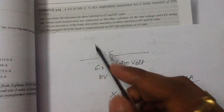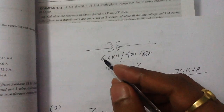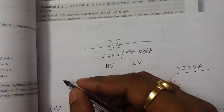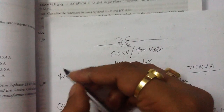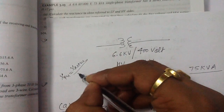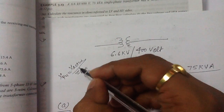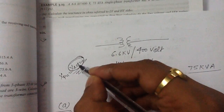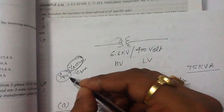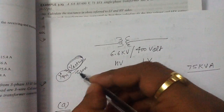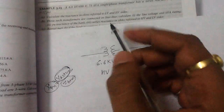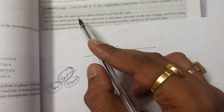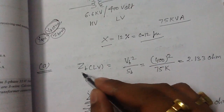To calculate the actual value of reactance, we use the definition: per unit = X_actual divided by Z_base. To get the actual reactance, multiply the per-unit reactance with Z_base. To find the reactance in ohms referred to the LV side, we must know the value of the base impedance of the LV side.